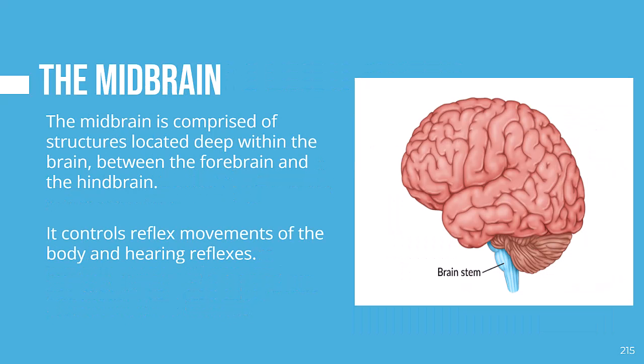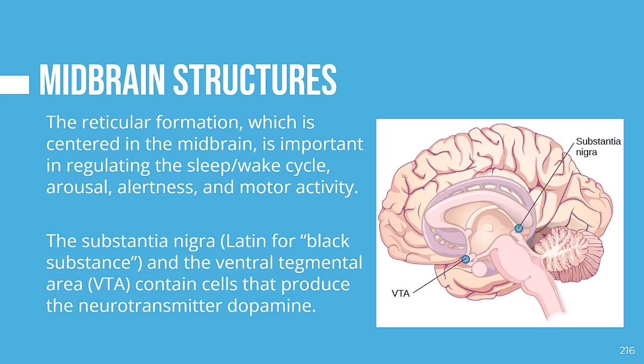The next division of the brain is the midbrain, comprised of structures located deep within the brain between the forebrain and the hindbrain. It controls reflex movements of the body and hearing reflexes. There are a few midbrain structures worth mentioning that are involved in mood, reward, and addiction. The reticular formation is centered in the midbrain but extends into the forebrain and hindbrain; it regulates the sleep-wake cycle, arousal, alertness, and motor activity. The substantia nigra and the ventral tegmental area (VTA) are also located in the midbrain. Both regions contain cell bodies that produce the neurotransmitter dopamine and are critical for movement. Degeneration of the substantia nigra and the VTA is involved in Parkinson's disease.